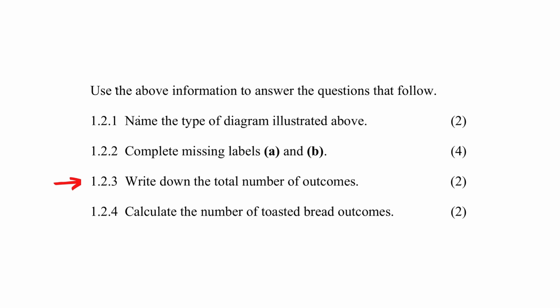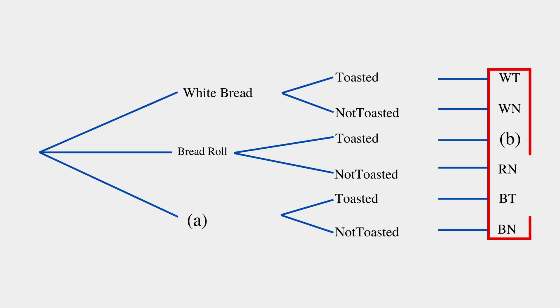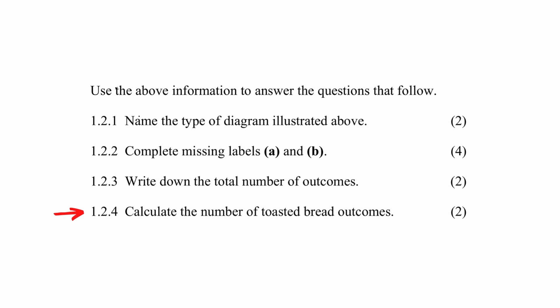In question 1.2.3, you are required to write down the total number of outcomes. The number of outcomes will be the sum of the options on the last branch, so the total number of outcomes is six.